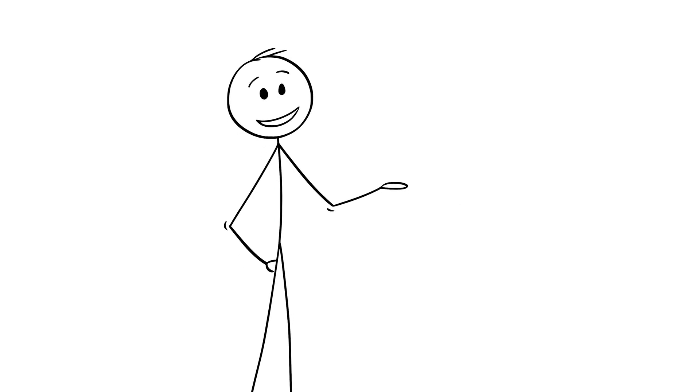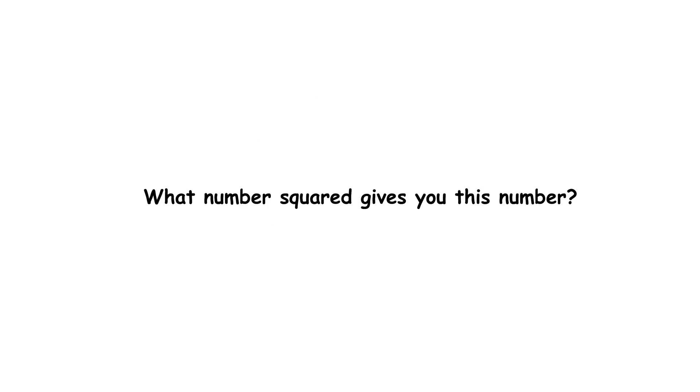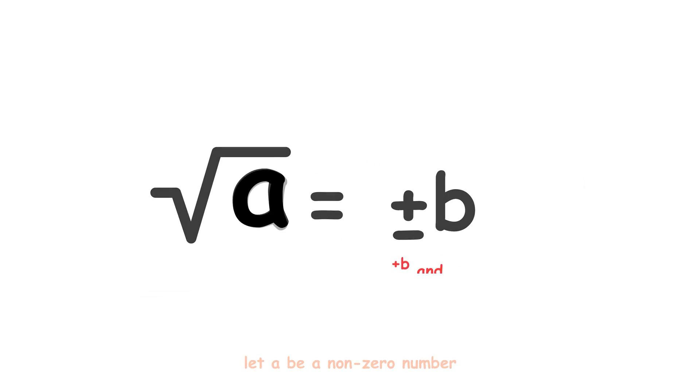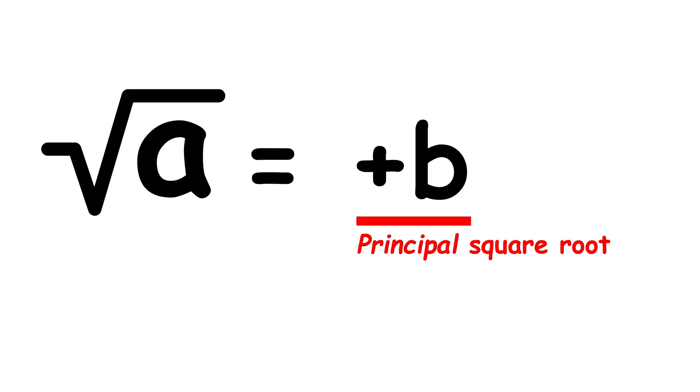Now, this idea of what number squared gives you this number is often useful in math, and it is called the square root. Actually, a non-zero number has two square roots. However, we conventionally choose the non-negative square root, called the principal square root, or just the square root for short.